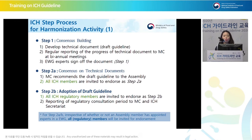During step one, the expert working group is organized. EWG experts develop a technical document as a draft. Once the draft is written, it moves to step 2A, where all ICH members need to discuss and agree on the guideline. Once agreement is reached, it moves to step 2B where the draft guideline is adopted. Although agreement was already reached at step 2A, another round of agreement building is done at the assembly.